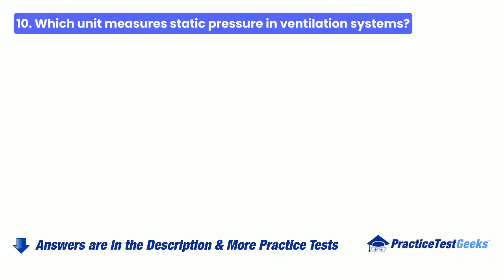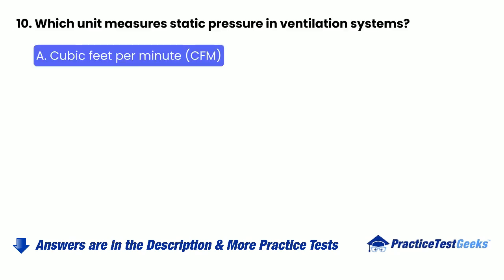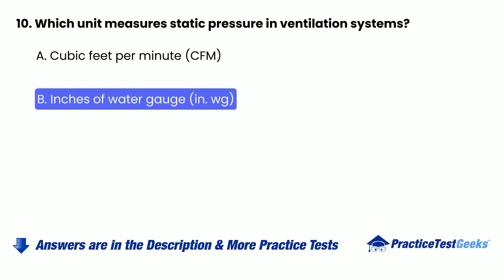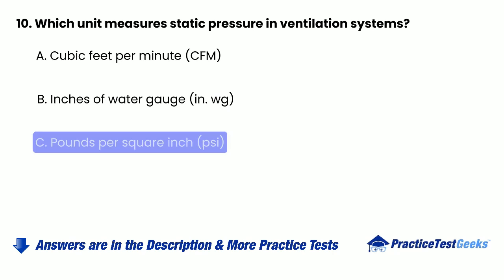Question 10: Which unit measures static pressure in ventilation systems? A. Cubic feet per minute. B. Inches of water gauge. C. Pounds per square inch.